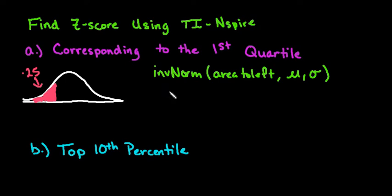For Z-scores, because we're talking about the standard normal distribution, what we would plug into our calculator is inverse norm. The area to the left is 0.25, our mean is 0 and our standard deviation is 1. So anytime you're finding Z-scores, mu is always 0 and the standard deviation is 1.